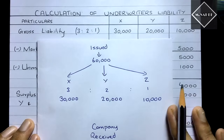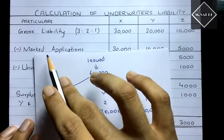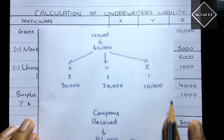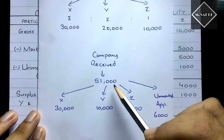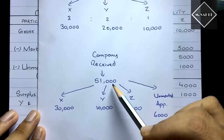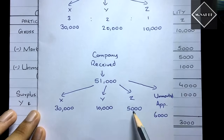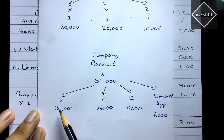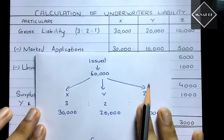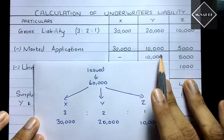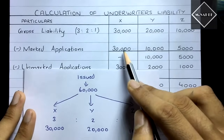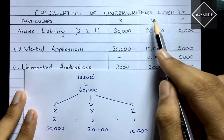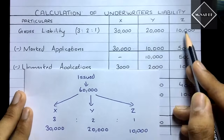Next, subtract the marked applications from the gross liability. Marked applications were X: 30,000, Y: 10,000, Z: 5,000. So: X = 30,000 − 30,000 = nil; Y = 20,000 − 10,000 = 10,000; Z = 10,000 − 5,000 = 5,000.